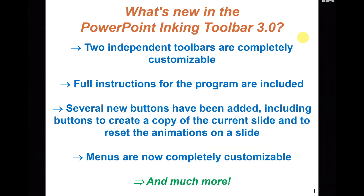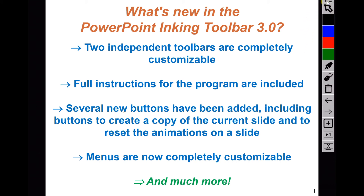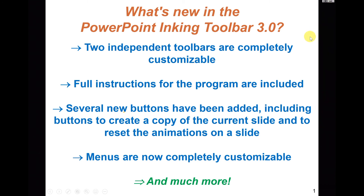The inclusion of a second independent toolbar opens up many possibilities. Here's a quick example where, if you don't like to see the toolbar on the screen, you could set the first toolbar to be a very tiny button, and then when you press it, it shows the second toolbar that has all the functionalities that you want. And when you press it again, it hides this second toolbar.